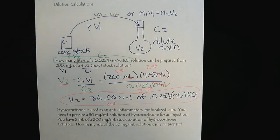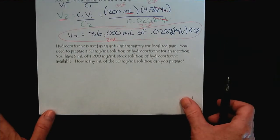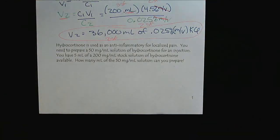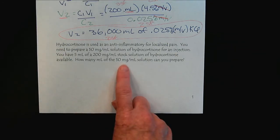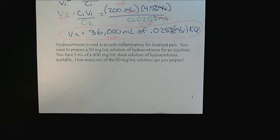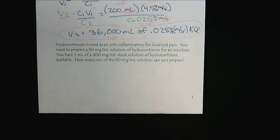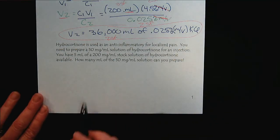Now, let's try another one. Hydrocortisone is used as an anti-inflammatory for localized pain. You need to prepare a 50 milligram per milliliter solution of hydrocortisone for an injection. You have 5 milliliters of a 200 milligram per milliliter stock solution. How many milliliters of the 50 milligram per mil solution can you prepare? This one is very similar to the one up above. Let's dissect it like we did the first one.